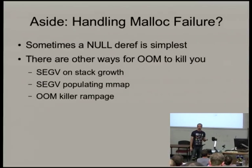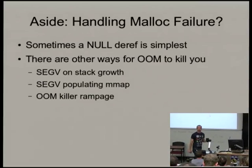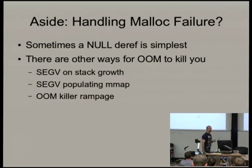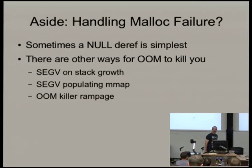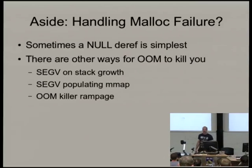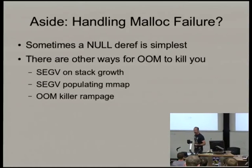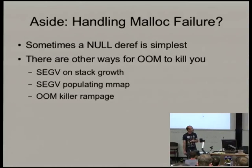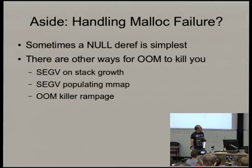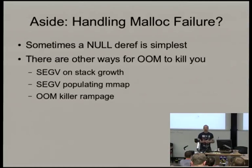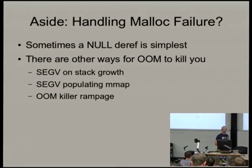Your stack could hit a certain point and the kernel says: you need another page, sorry, you can't have it — boom, you explode. Does your code handle that? Do you know how likely that is versus other methods of out-of-memory? And of course the OOM killer in the kernel could just decide there isn't enough memory and shoot some processes.